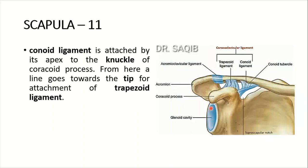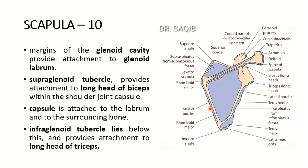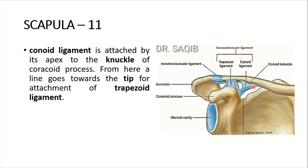The margin of the glenoid cavity provides attachment to the glenoid labrum. I have given five videos on the shoulder joint and its clinicals — you can go there for anything regarding the glenohumeral joint. The supraglenoid tubercle provides attachment to the long head of biceps, and the infraglenoid tubercle provides attachment to the long head of triceps.